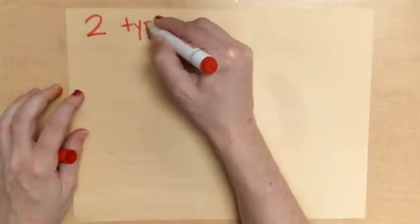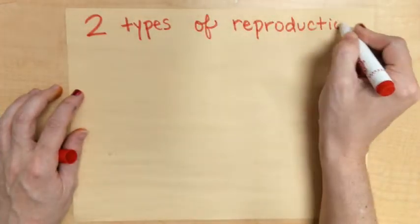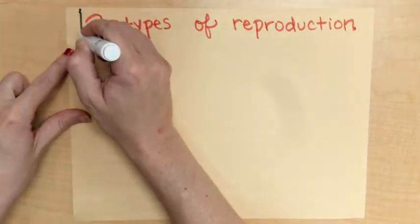So let's get to it. Let's start learning about reproduction — that's what the rest of the video is going to be about. So the two types of reproduction are either sexual or asexual.